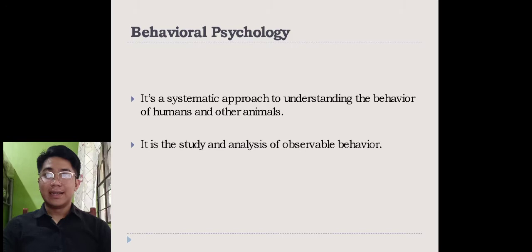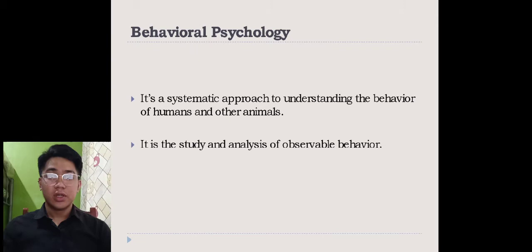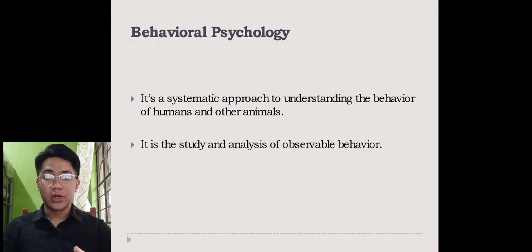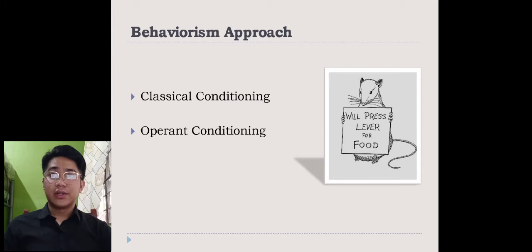Let's move on to behavioral psychology. Behavioral psychology is a systematic approach to understanding the behavior of humans and other animals — it is the study and analysis of observable behavior. A systematic approach is a step-by-step approach used to learn the behavior of living things. Under behavioral psychology, there are two different approaches known as behaviorism: classical conditioning and operant conditioning.